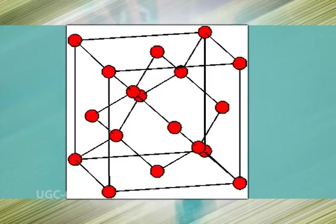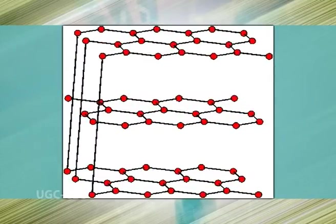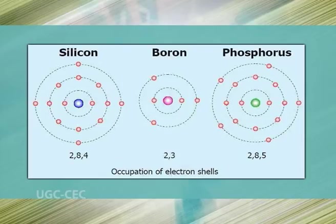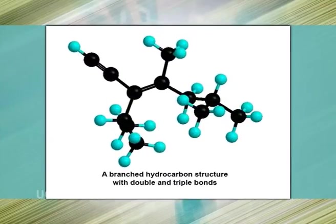The diamond lattice is a three-dimensional network of carbon atoms, whereas graphite more closely resembles a planar network. Carbon is not unique in forming bonds to itself, as other elements such as boron, silicon, and phosphorus also form strong bonds in their elementary state. The uniqueness of carbon stems more from the fact that it forms strong carbon-carbon bonds that remain strong when in combination with other elements.